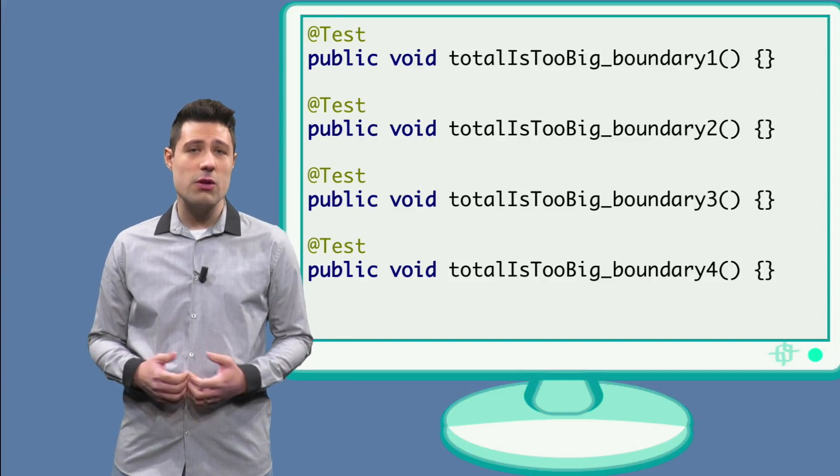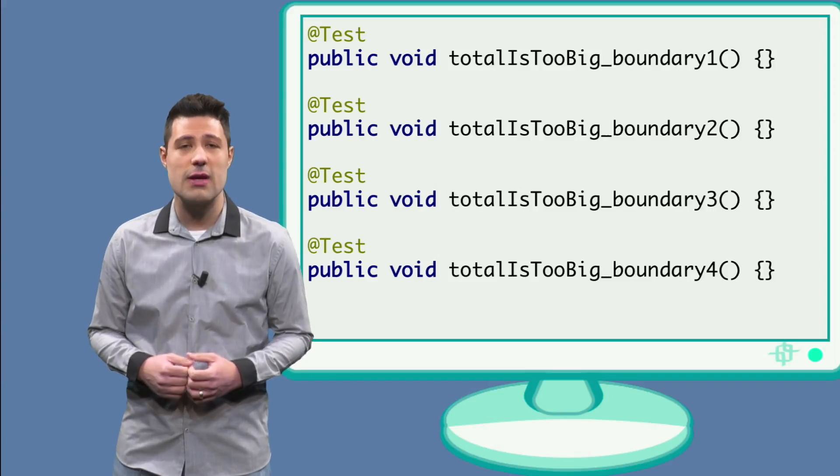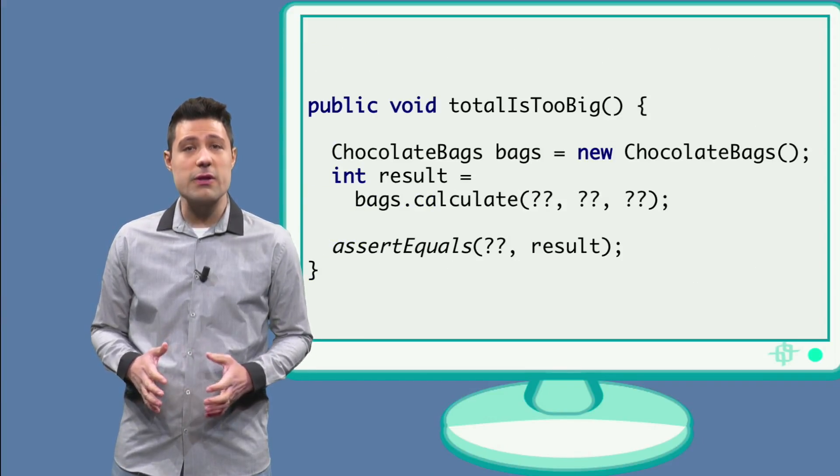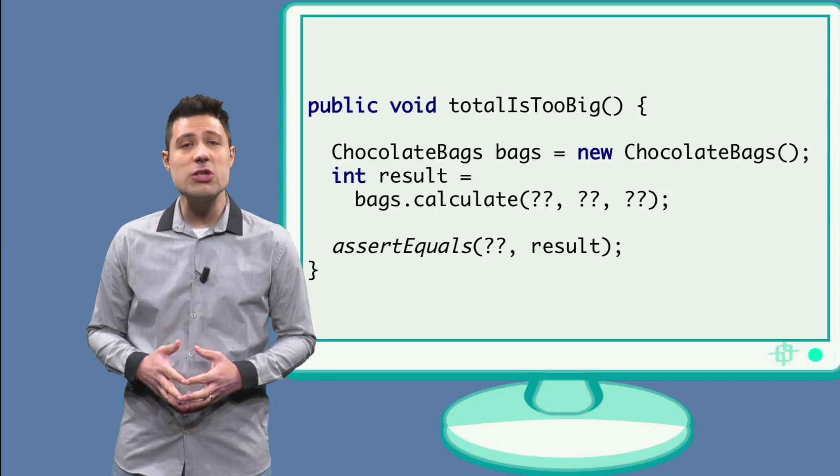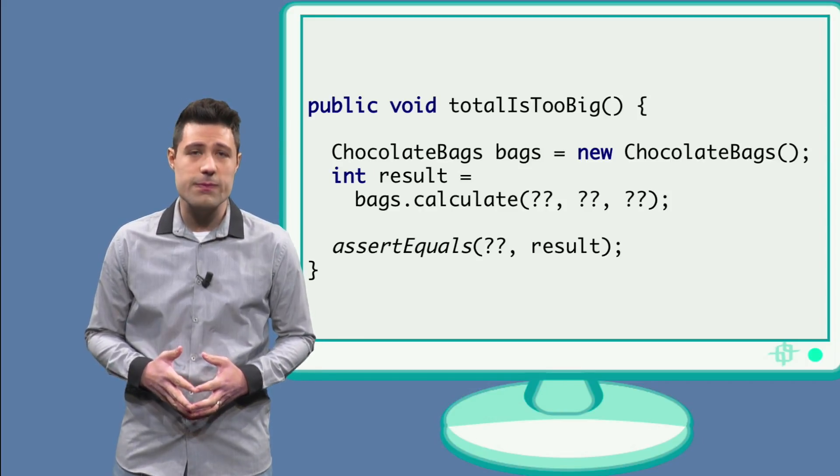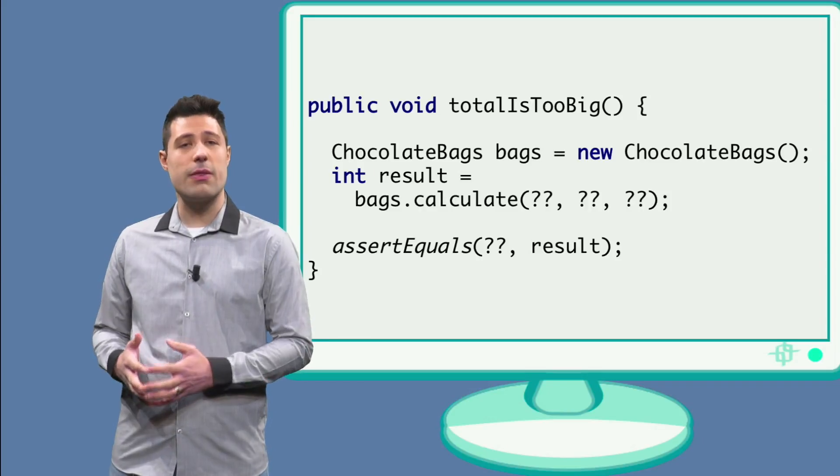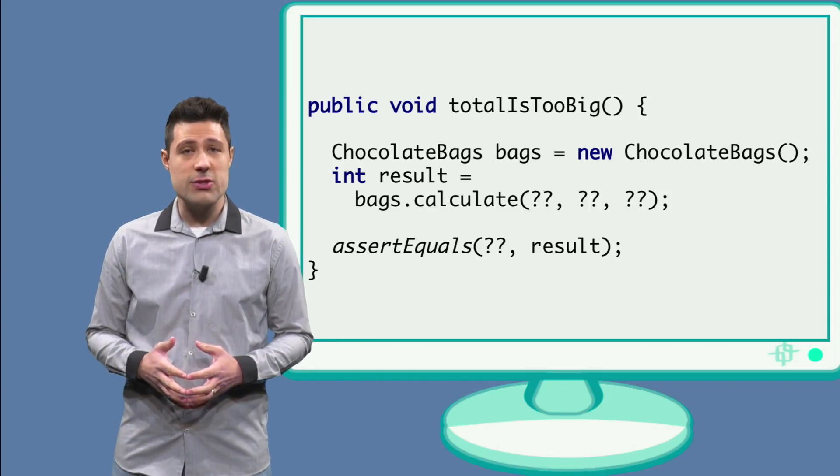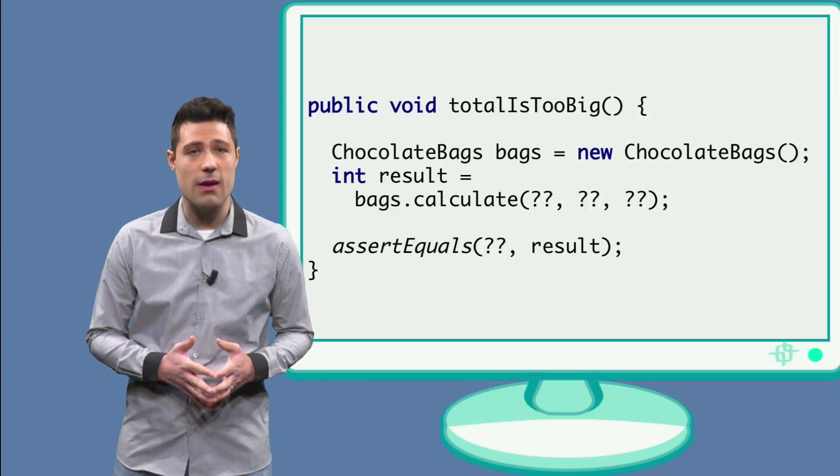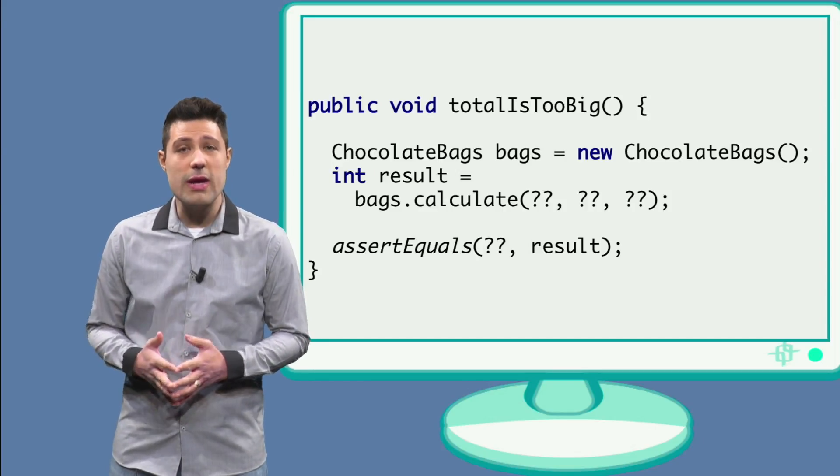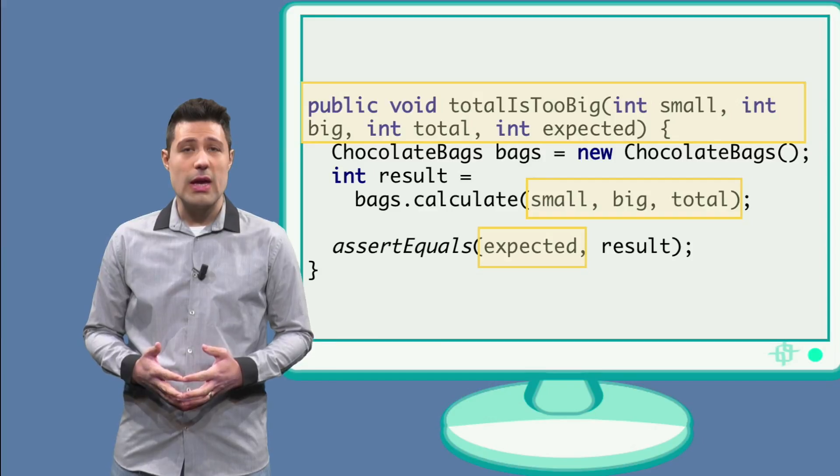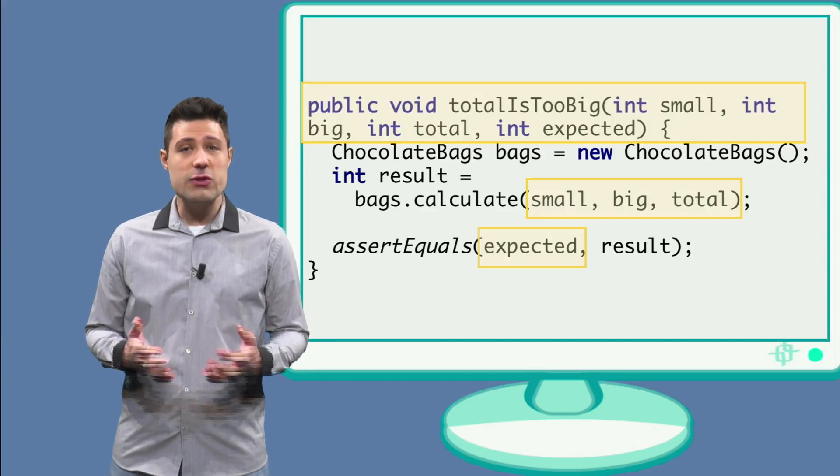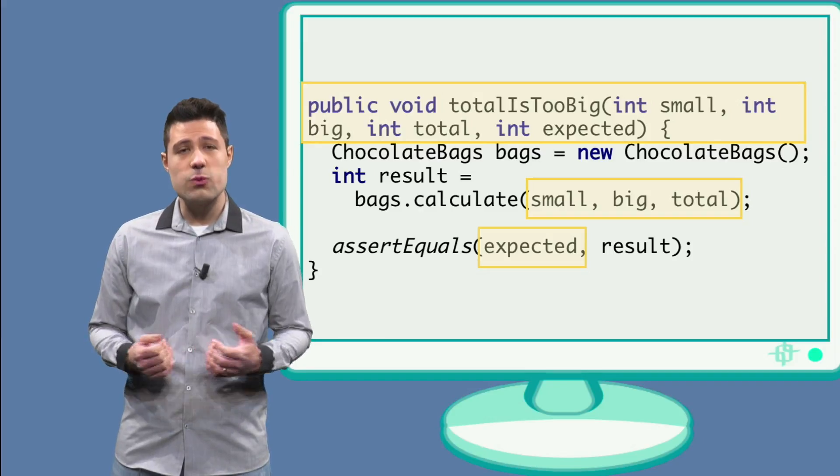So let's write the template of our test method. It instantiates the ChocolateBags class, invokes the Calculate method and makes an assertion. However, instead of passing the concrete input to Calculate and then to the assertion, we can pass variables. In JUnit, we can receive parameters in the method and use them in our test. And that's what we'll do.